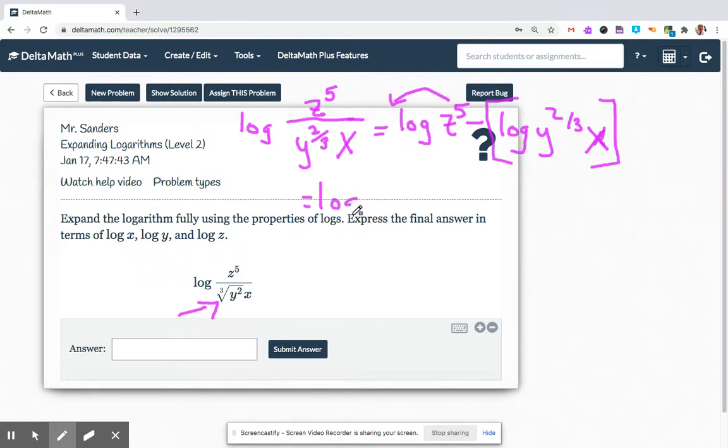now I can move that 5 in front right now, but let's just go ahead and do that all in one step, because I see I have another one right here. So log of z to the 5th, I'll wait to move the 5, minus, let's do a bracket, log y to the 2 divided by 3.